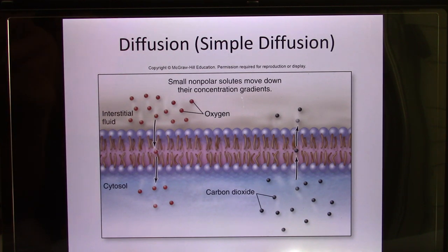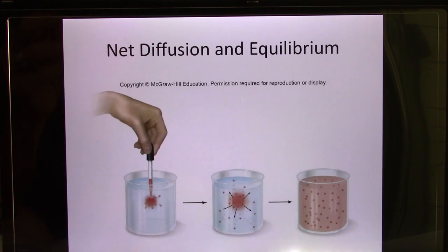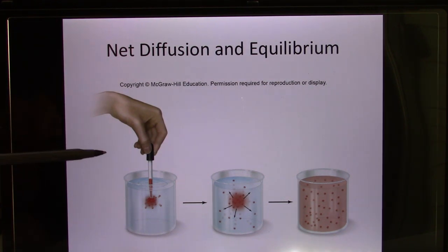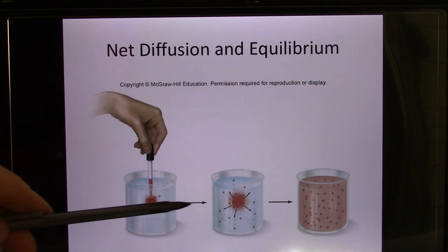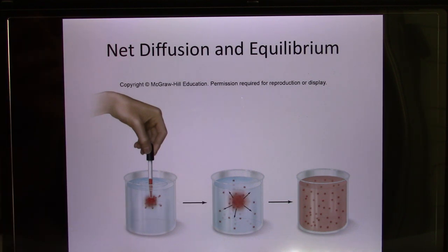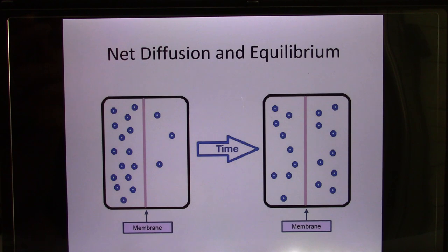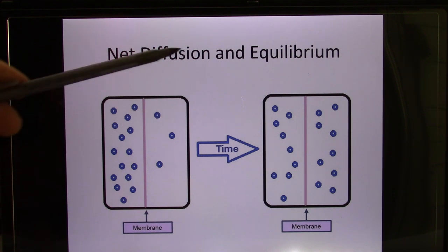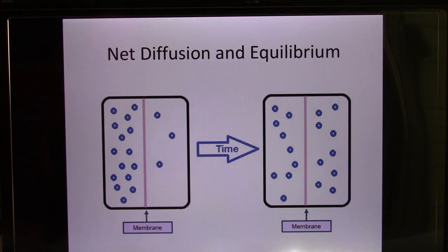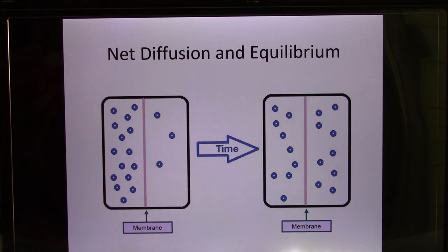So simple diffusion is used for molecules that can freely pass through the cell membrane — you put the molecule into an environment and it naturally goes from high to low. When does it stop? It stops when there's no concentration gradient — that's when you reach equilibrium. When there's no concentration gradient, that's when diffusion stops.